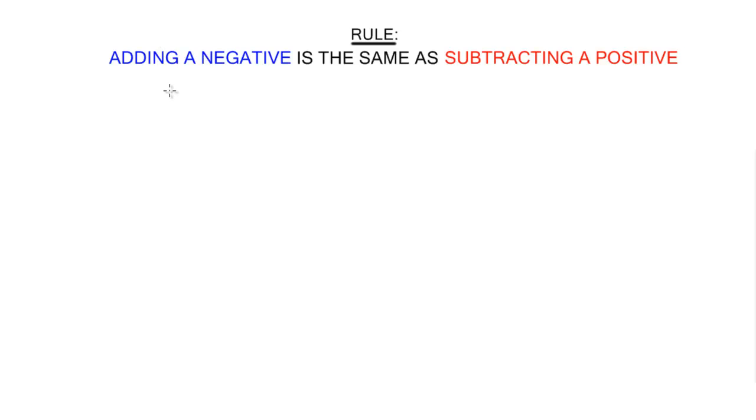In other words, if I take some number, let's call it A, and I add a negative, let's call it B, it doesn't matter if I have parentheses or not, that is the exact same thing. So it equals the same thing if I were to simply say A minus B.